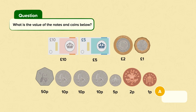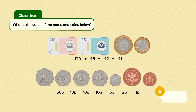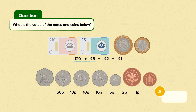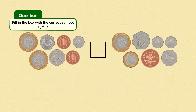When we're adding the pounds we have 10 pounds plus 5 pounds plus 2 pounds plus 1 pound, which is equal to 18 pounds. Now when working with the other coins we have 50p plus 10p plus 10p plus 10p plus 5p plus 2p plus 1p. The total of this is 88p, so in total we have 18 pounds and 88p.